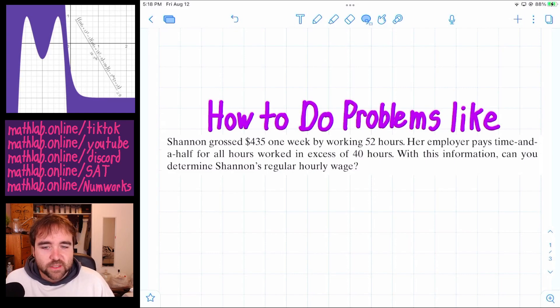Her employer pays time and a half for all hours worked in excess of 40 hours. So that means he's going to pay her normal hourly wage plus half of it. That's a normal thing that happens for overtime or holidays. With this information, can you determine Shannon's hourly wage?